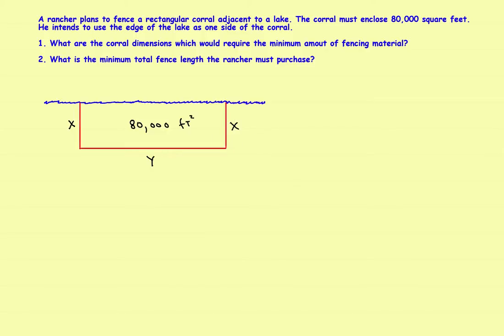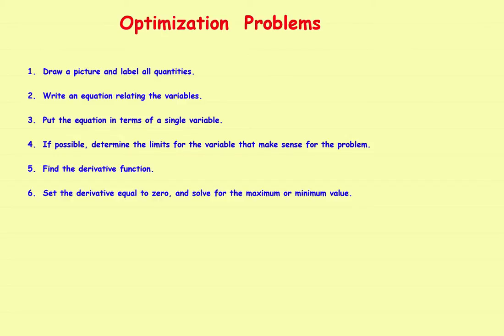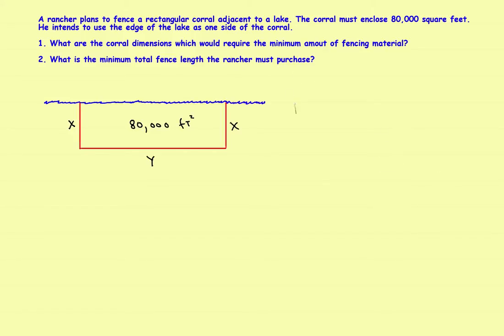That takes care of step one. Step two: write an equation for the thing you're trying to minimize or maximize. Going back to the problem, we're trying to minimize the total length of fence — the perimeter. We have two sections of X and one section of Y, so the length L equals 2X plus Y. That's our formula to minimize.